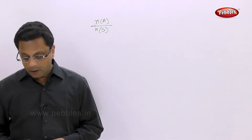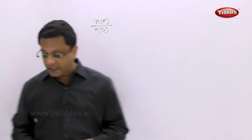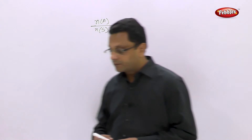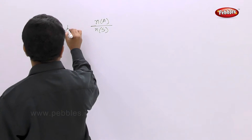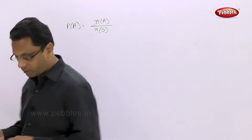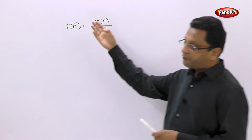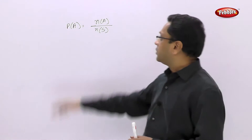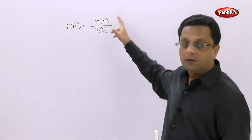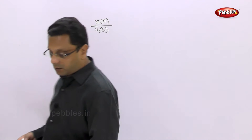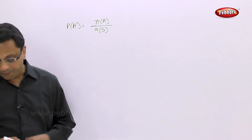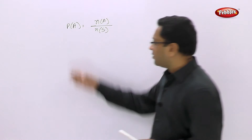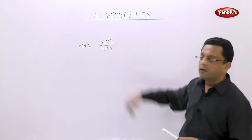If you define it — the probability of event A of a finite sample space S is written as P(A), and is defined as the number of elements in the event divided by the number of elements in the sample space. So just remember, whenever you want to find out the probability, that will be n(A) upon n(S).